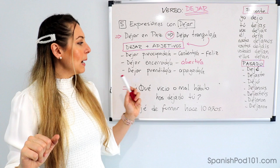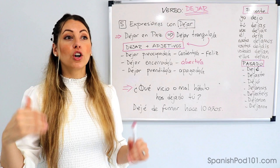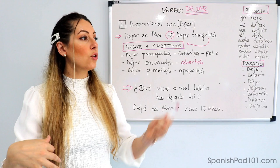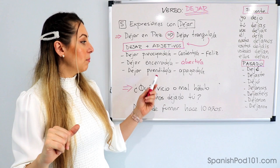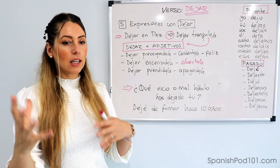Dejar prendido o apagado — prendido significa 'turned on' and apagado 'turned off'. For example, a light, the toaster, the kettle — all appliances, things with a switch. You can leave them turned on or turned off. These are examples of how you use el verbo dejar with some adjectives.